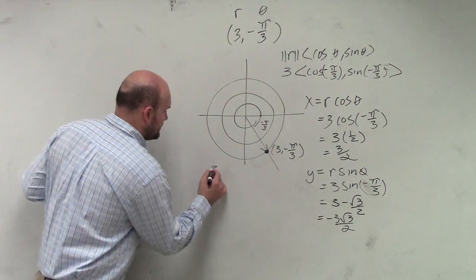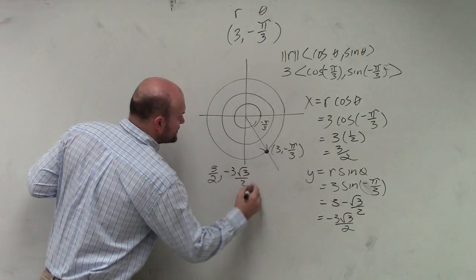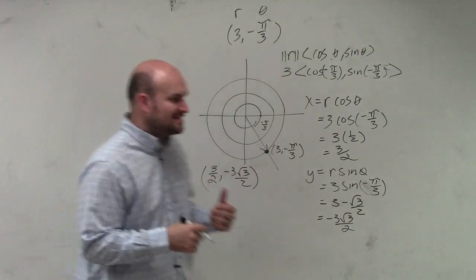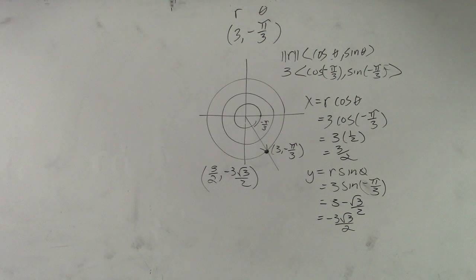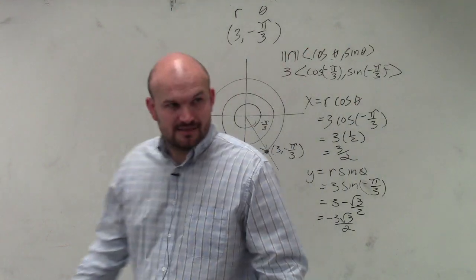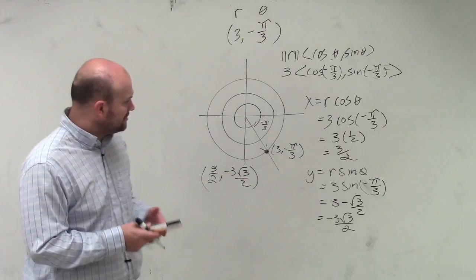So now we have my point, 3/2, comma, negative 3√3/2. To make sure we did this correct, does that at least give us a point that's in the fourth quadrant? Is our x-coordinate positive and our y-coordinate negative? Yes? Yes? And then if you really wanted to even double check,